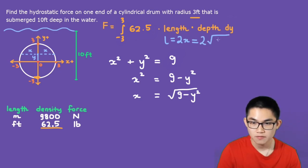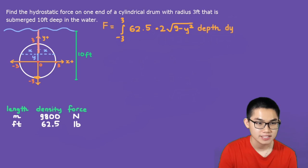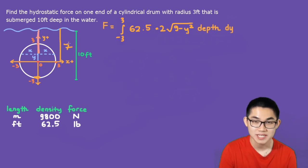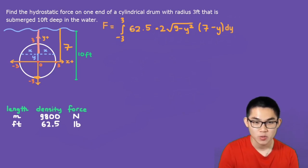The depth is the distance from our stripe to the surface of the water. We know the total submerged distance is 10 feet and the radius is 3, so the distance from the surface to the center of the circle is 10 − 3 = 7. If we then subtract y (the vertical position of the stripe from the center), the depth expression becomes 7 − y.